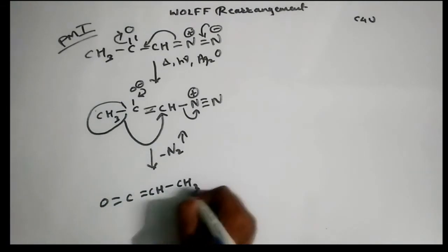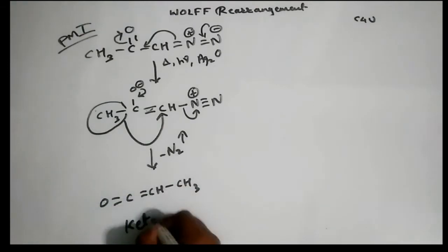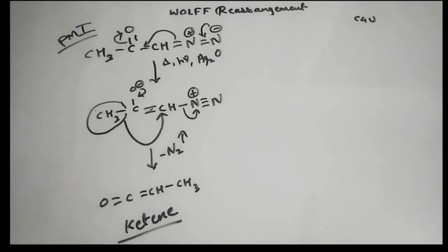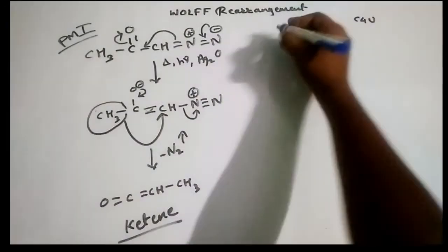So this is the stable product we are getting, ketene. And this ketene can be hydrolyzed further to carboxylic acids, that we will see. But by now, let's see the possible mechanism two.